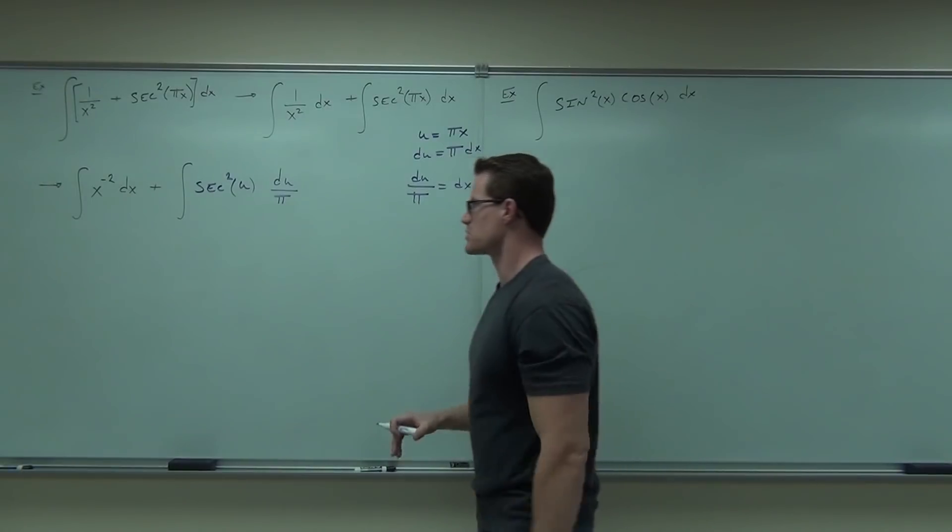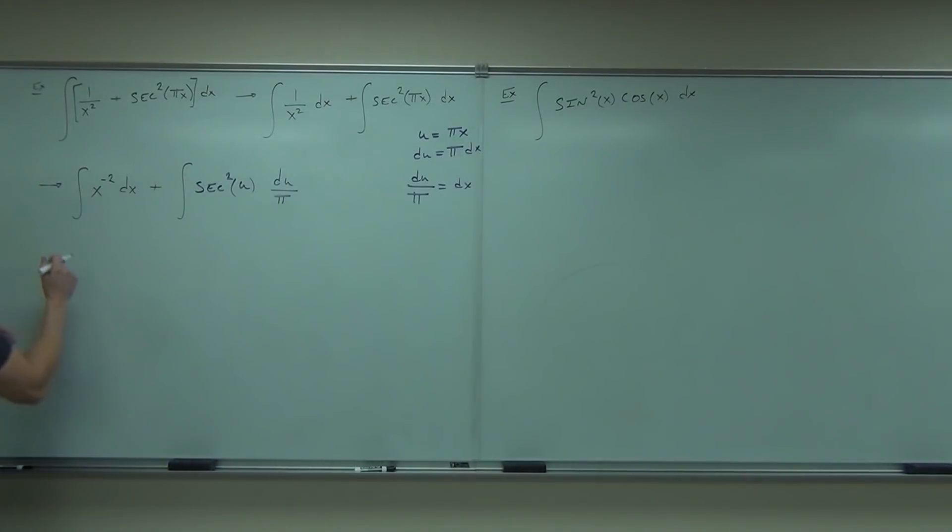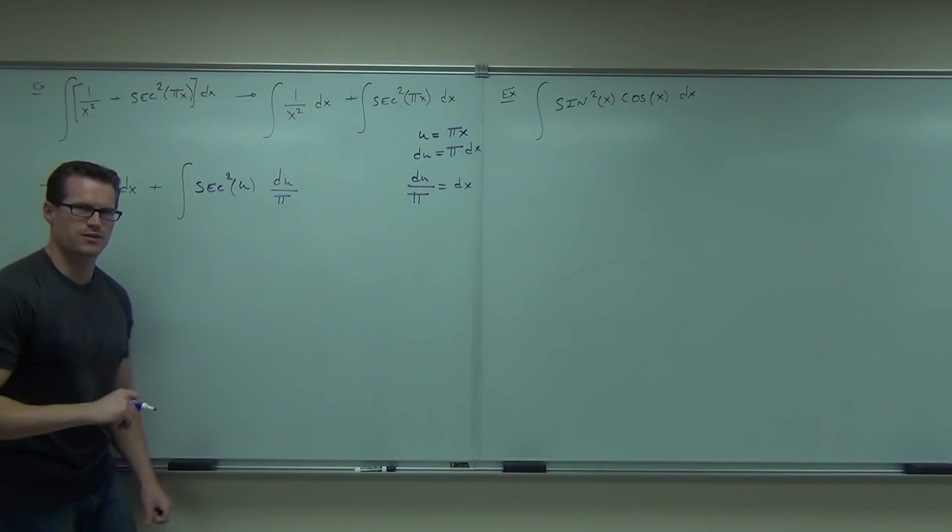And then du over pi. How many people made the substitution look just like that? Good. That's fantastic. That's a correct substitution. Now, this integral is pretty easy. We're going to do x to the negative 3 over negative 3, right? What did I do wrong? It's a very common mistake.